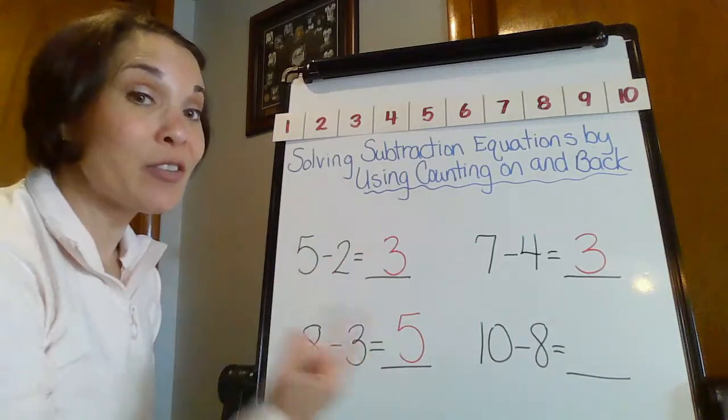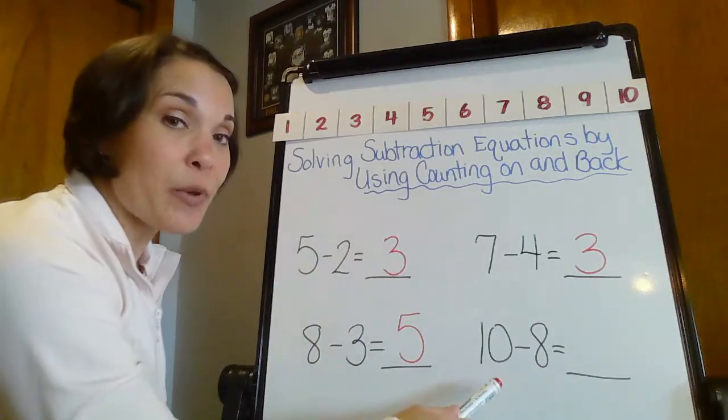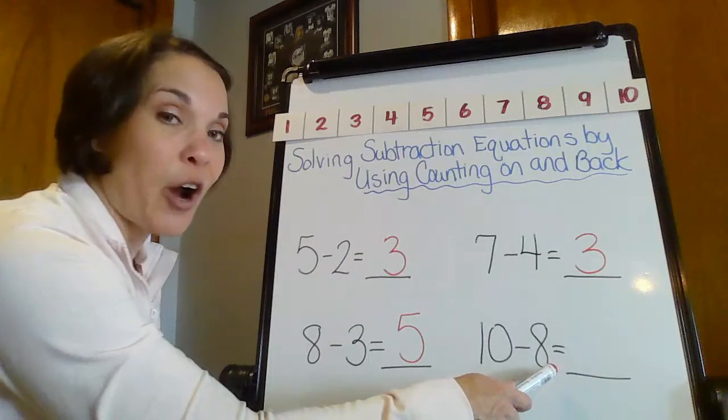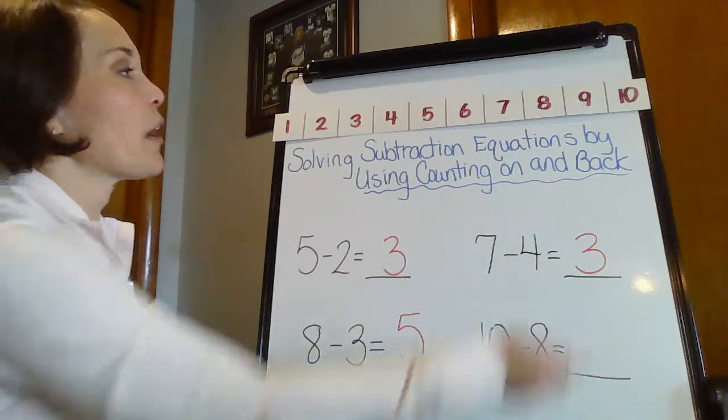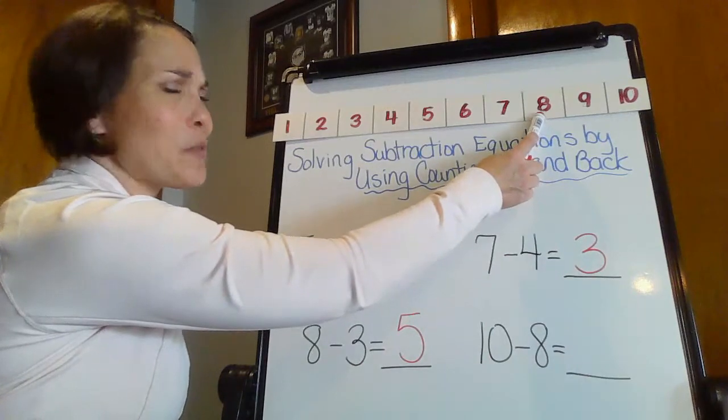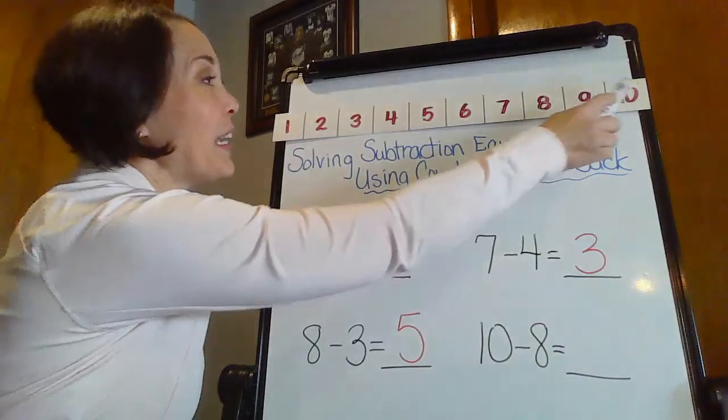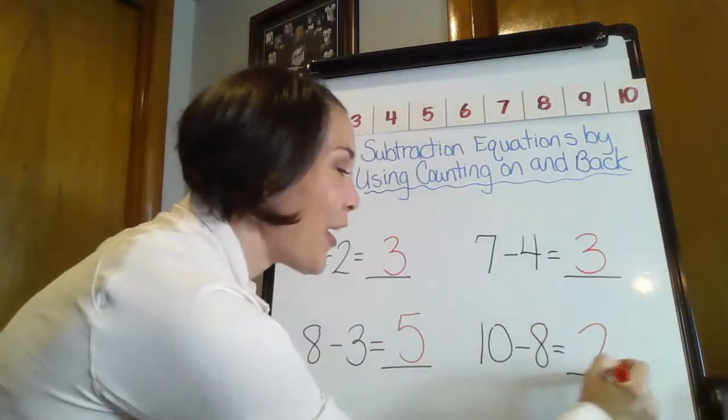So now let's use that counting on strategy. Not start with that big number. Remember I'm starting with that part and I'm counting up to that big whole number. So here I go. Eight. How many hops? I'm hoping it's two. One, two.